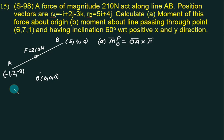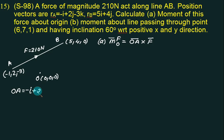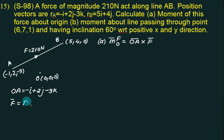OA means coordinate of A minus coordinate of O. A is minus 1, so minus 1 minus 0 is minus i; 2 minus 0 is 2j; minus 3 minus 0 is minus 3k. And F bar is written as F times the unit vector along AB.